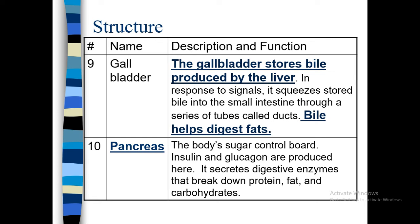Next is the pancreas — the body's sugar control board. The pancreas controls the body's sugar; it produces insulin and glucagon. It also secretes digestive enzymes that break down proteins, fats, and carbohydrates.